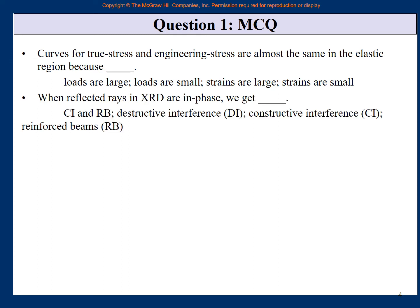When reflected rays in XRD are in phase, we get what? Destructive interference, constructive interference, reinforced beams. So they are in phase, so it is not destructive, it is constructive. But for constructive interference, there is another name called reinforced beams. The two beams are reinforced by each other. So the answer is CI and RB, constructive interference and reinforced beams, because they both mean that the light will be seen now because a strong light beam is being there. It is not destroyed.